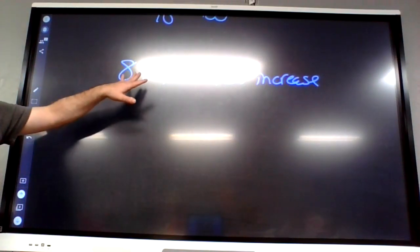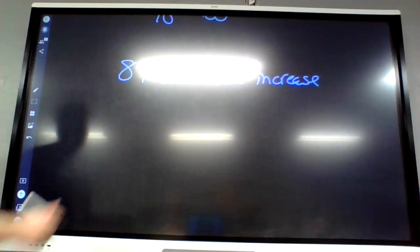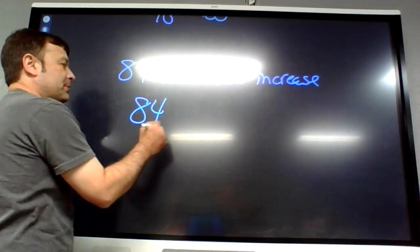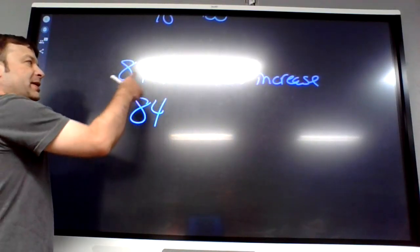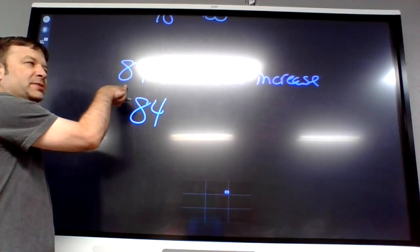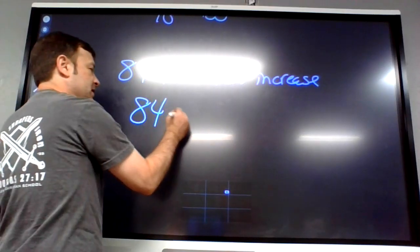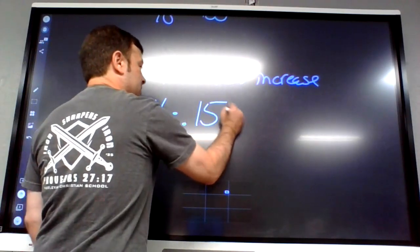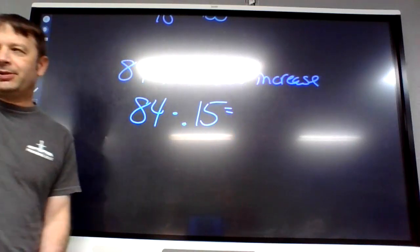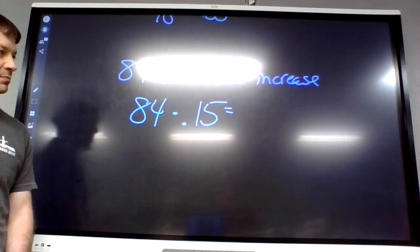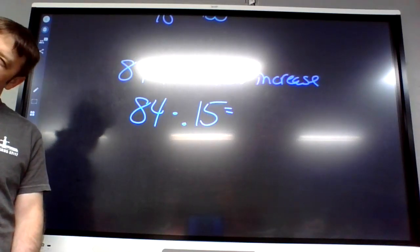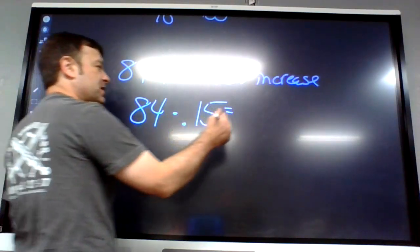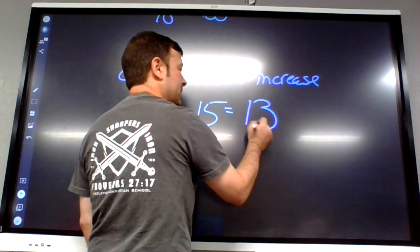To increase something by 15 percent, first you need to find out what 15 percent of this number is. So calculate 0.15 times 84. That gives you 12.6 — since we're talking about people, round that to 13.